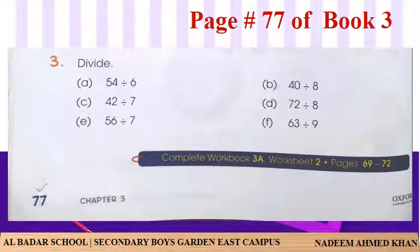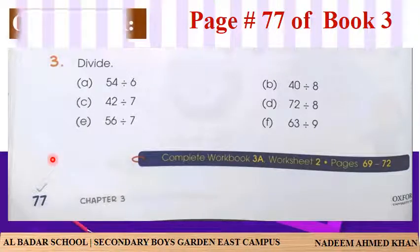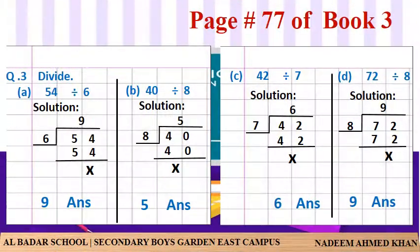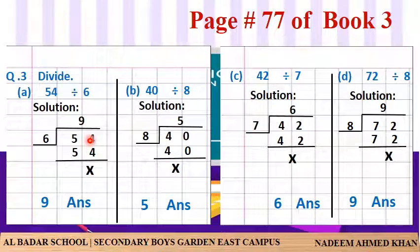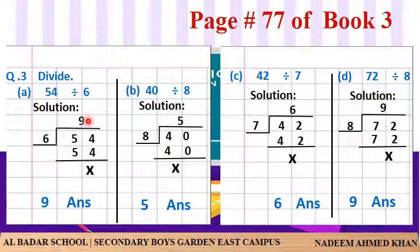Page 77، book 3، question number 3: division کے سوالات۔ پہلا: 54 divided by 6۔ 54 dividend کہلاتا ہے اور 6 divisor کہلاتا ہے۔ divisor ہمیشہ باہر لکھا جاتا ہے اور dividend اندر۔ 6×9=54، اور 54 minus 54 = کچھ نہیں بچا، cross لگا دیا۔ Answer 9 ہے۔